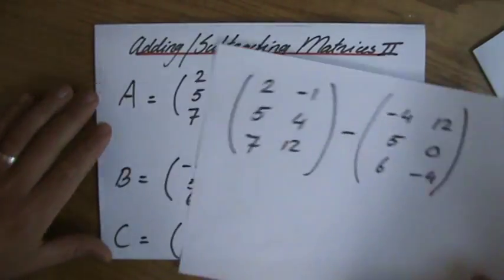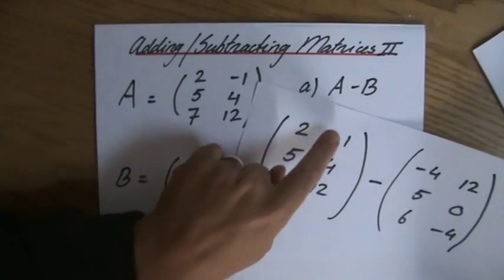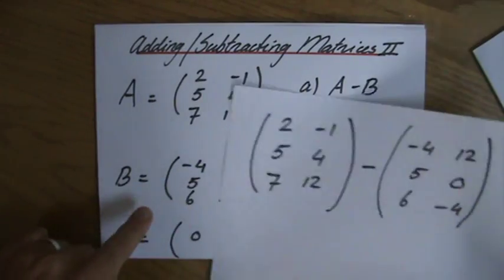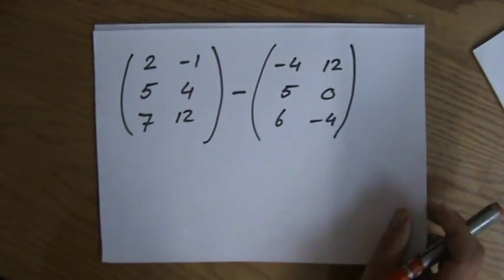where I just copy matrix A: 2, 5, 7, minus 1, 4, 12, and then minus matrix B: minus 4, 12, 5, 0, 6, minus 4.